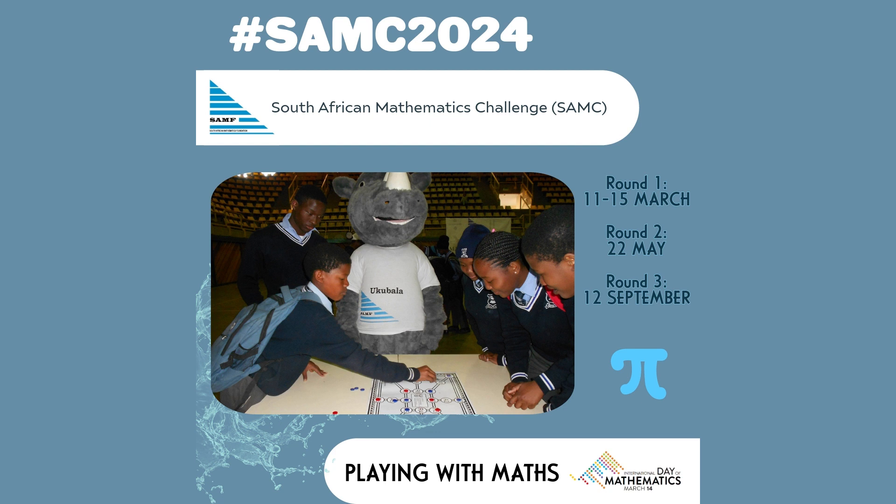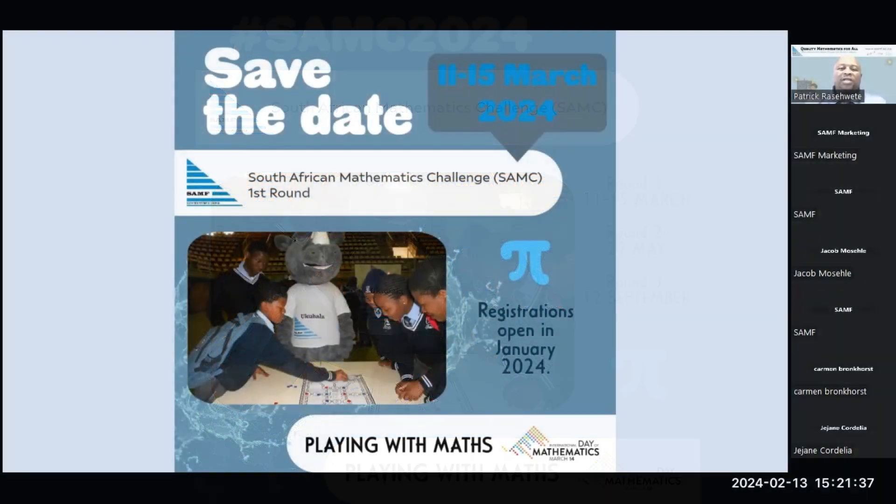From each grade, grade four and grade five will be grouped together to write as junior learners, and grade six and grade seven will be writing as senior learners. From the senior group and the junior group, the top ten learners will be selected to receive awards at the South African Mathematics Foundation.